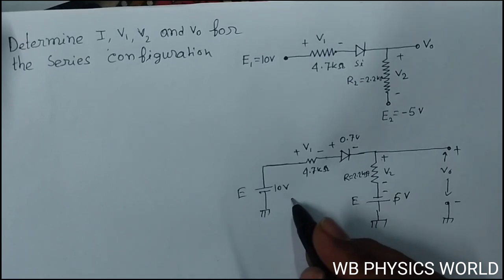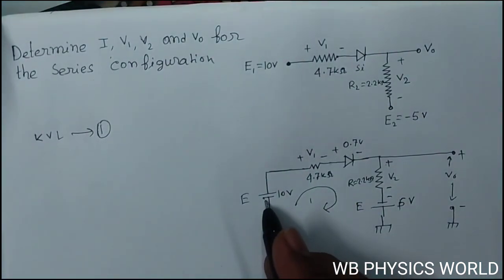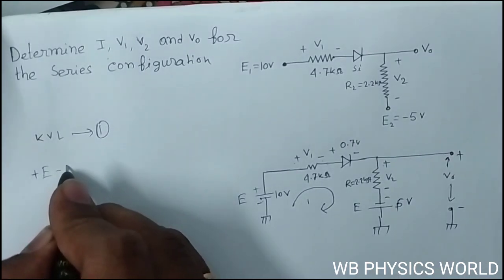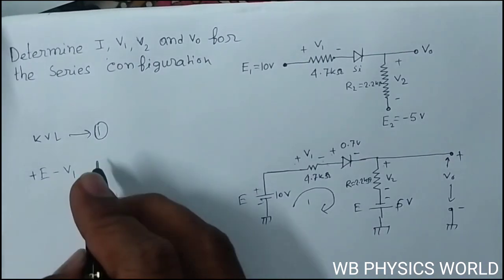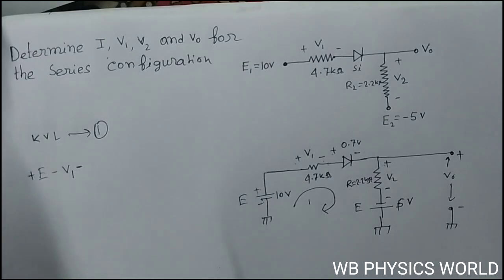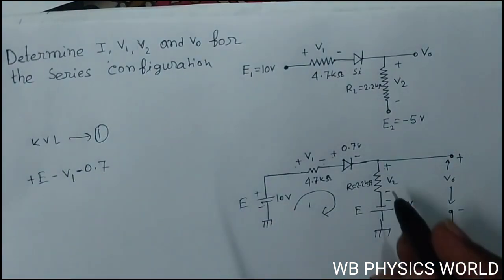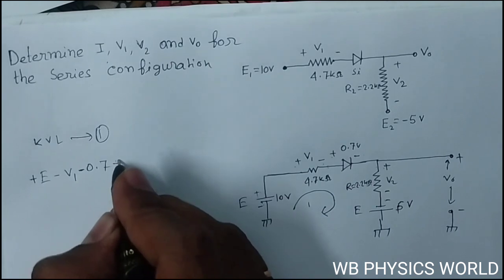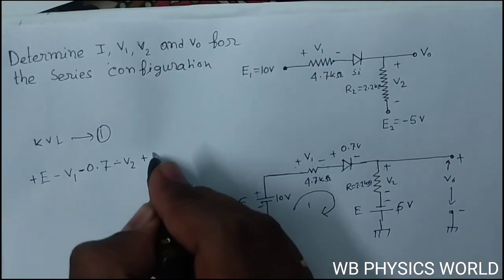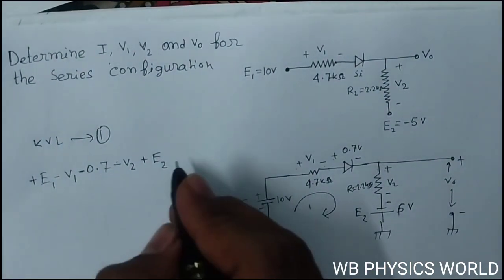Now applying Kirchhoff's voltage law in loop 1: going minus to plus gives plus E, plus to minus gives minus V1, minus 0.7, minus V2, and plus E1 and E2. Setting the sum equal to zero.